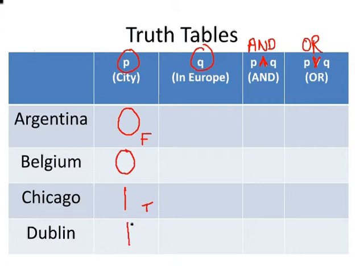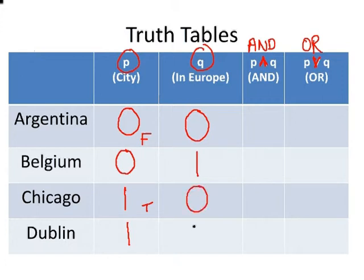Now we're going to look at proposition Q — are these places in Europe? Argentina is in South America, so that's a zero. Belgium is in Europe, right in the heart of Europe, so give that a one. Chicago is in North America — zero. And Dublin is in Ireland, which is in Europe, so give that a one.